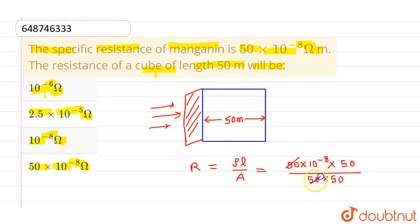So now this 50 and this 50 will cancel out. Similarly, this and this 50 will cancel out. So we will be having 10 raise to power minus 8 ohm as the resistance of this particular cube.